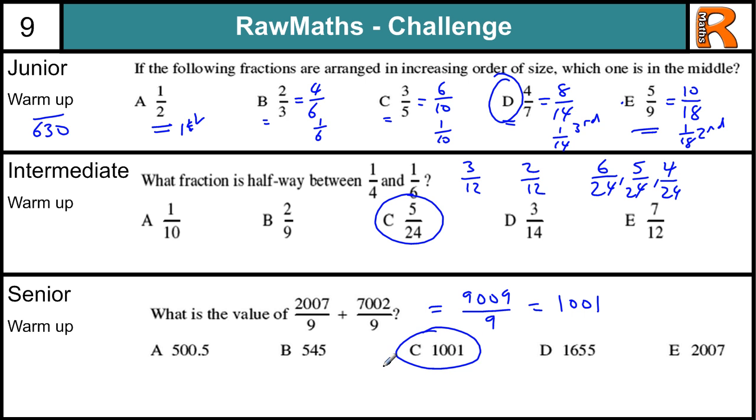And nine goes into nine once. That's one-thousand-one. So actually, if you know what you're doing, that's a very straightforward question. Although it was on a senior maths challenge paper.